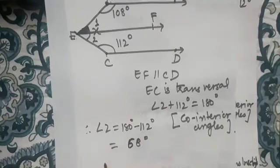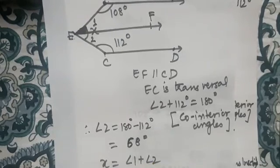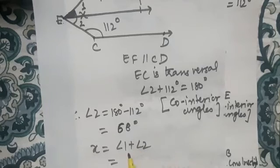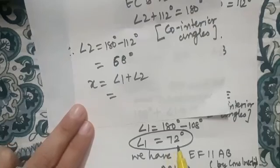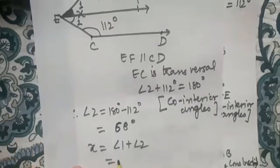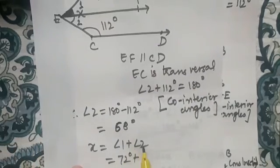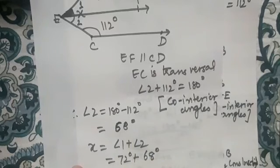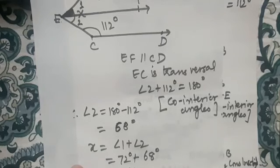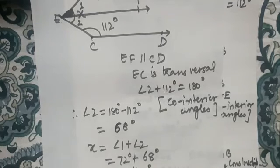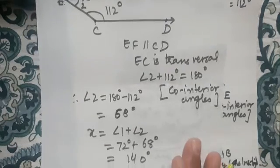Now we find the value of x. x equals angle 1 plus angle 2. Angle 1 is 72 degrees and angle 2 is 68 degrees, so x equals 72 plus 68, which gives us the answer: x equals 140 degrees.